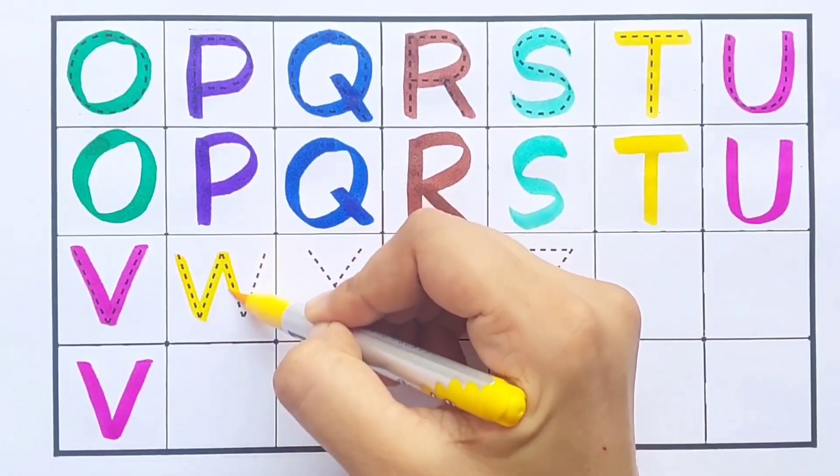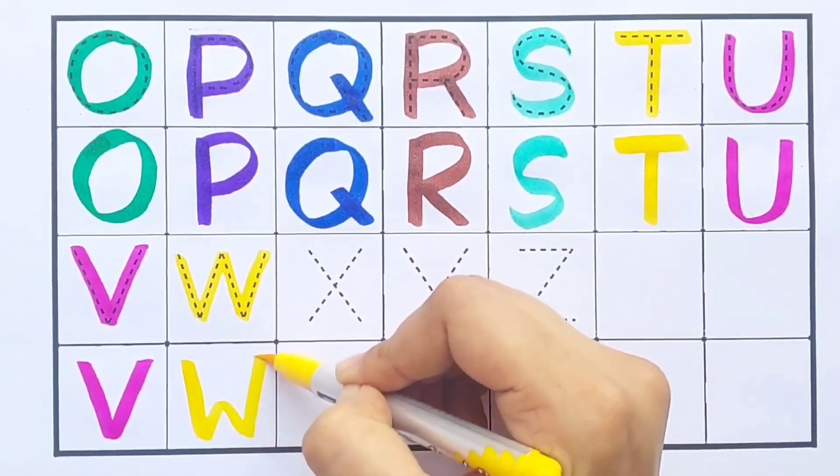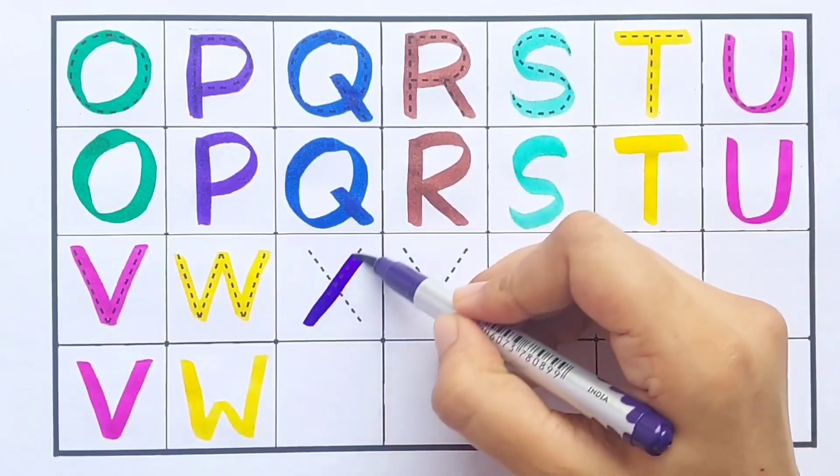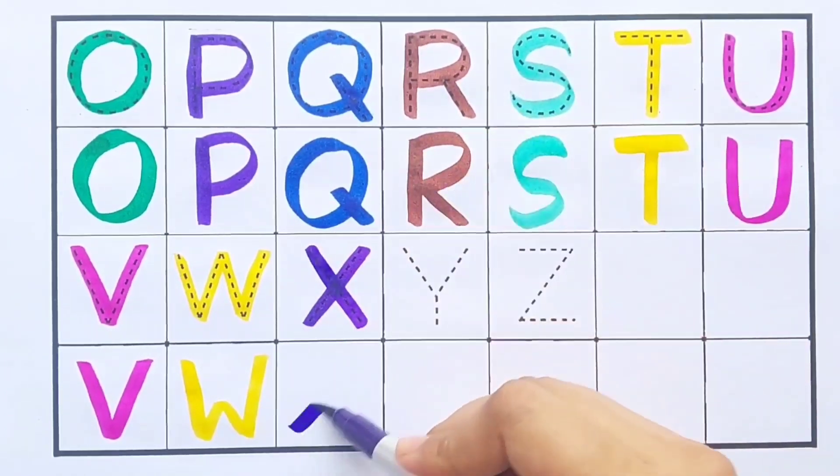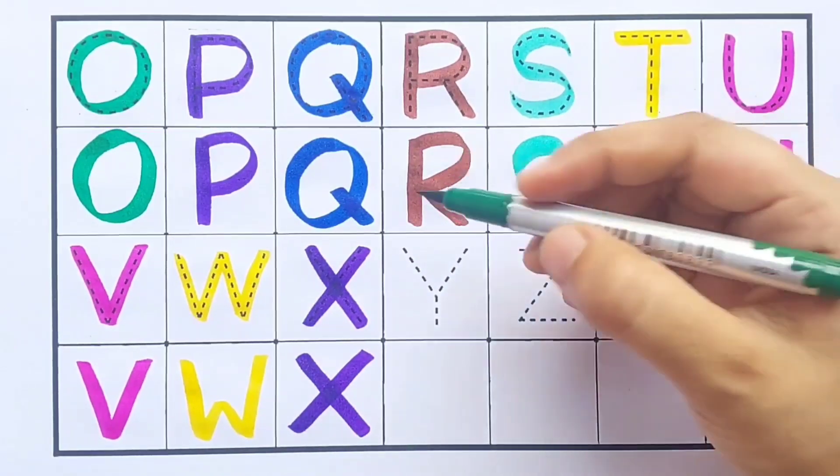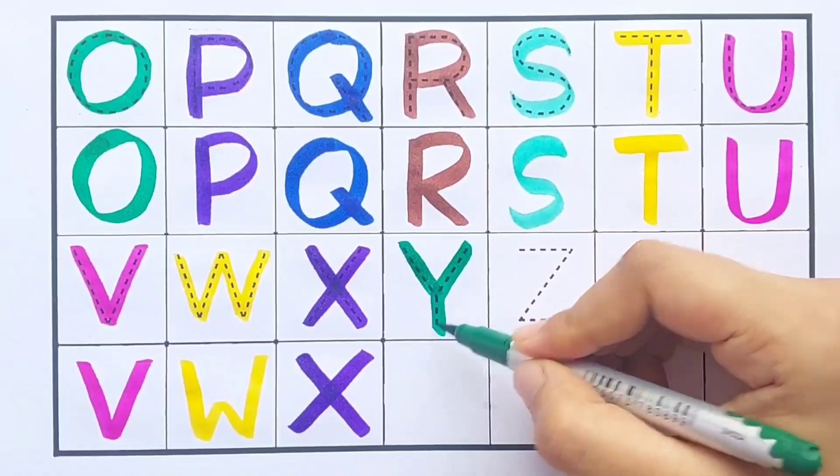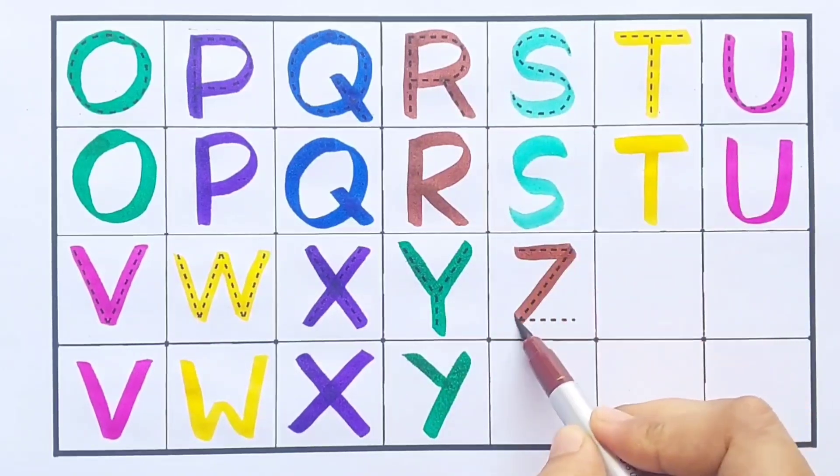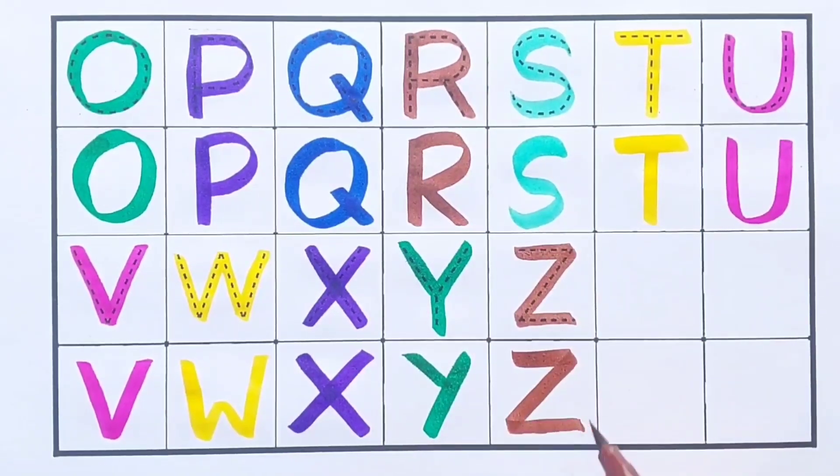Yellow color, W. W for watch. Purple color, X. X for xylophone. Green color, Y. Y for yoyo. Brown color, Z. Z for zebra.